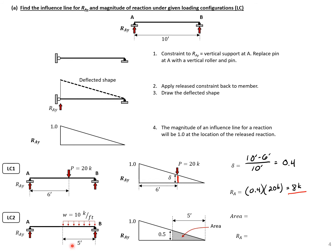For LC2, we have a distributed load from mid-span (5 feet) to the right support. We find the area of our influence line over that region — a triangle with area = 0.5 × base × height = 1.25 feet. The reaction is then 1.25 feet × 10 kips/foot = 12.5 kips. This is the reaction in the left support from the distributed load in load configuration 2.